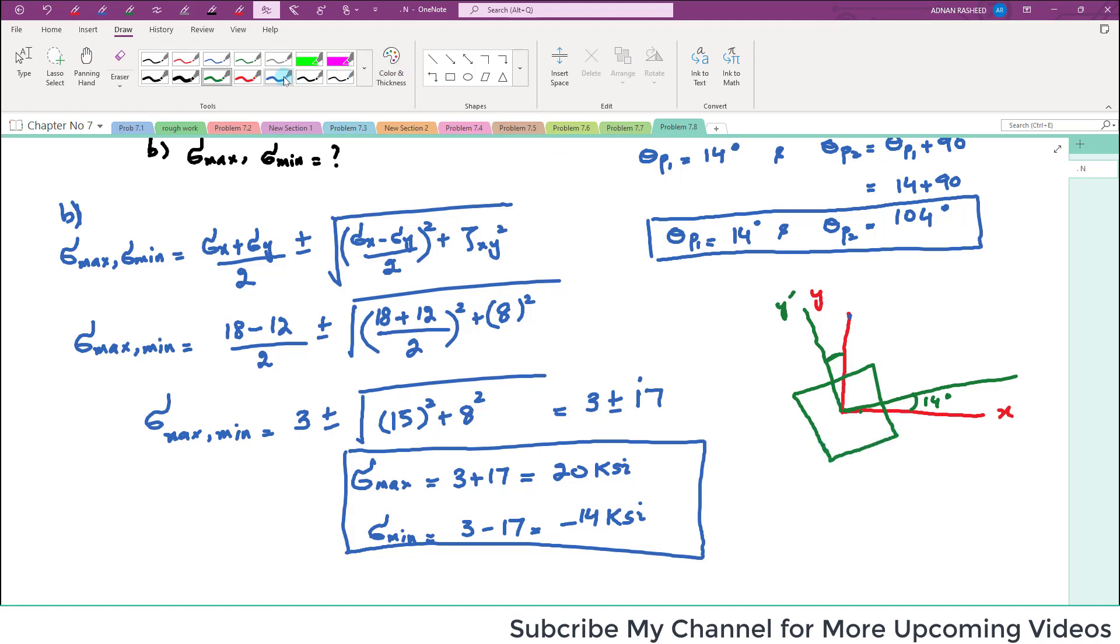Now your element will be like that here. So you will represent the stresses. This force will be perpendicular to this face. So when you draw, you will take care of that. This is sigma_max, and this sigma_max is 20 ksi here.